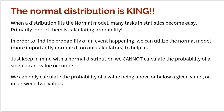Keep in mind that the normal distribution cannot calculate the probability of a single exact value occurring. It can only calculate probabilities above, or below, or in between two values.